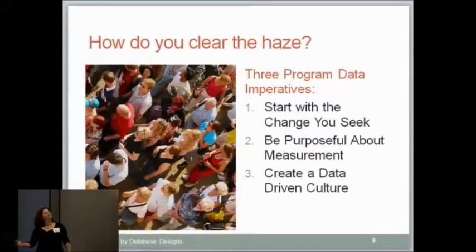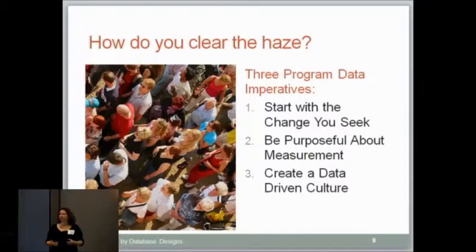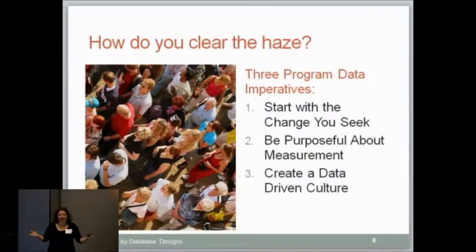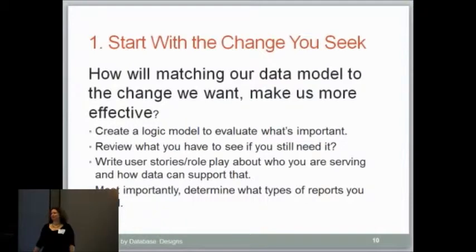We went through that wish list and got an understanding of the change they needed. They needed something that would actually house and manage their data in a usable way. In addition, they had a boss who said, 'I just want to see everything on this one page,' and the people in the department were saying, 'I don't know how to put it all on one page' — they're dealing with events and housing and all kinds of things. So how do you start the process? How do you take everything in these disparate locations and pull it together?